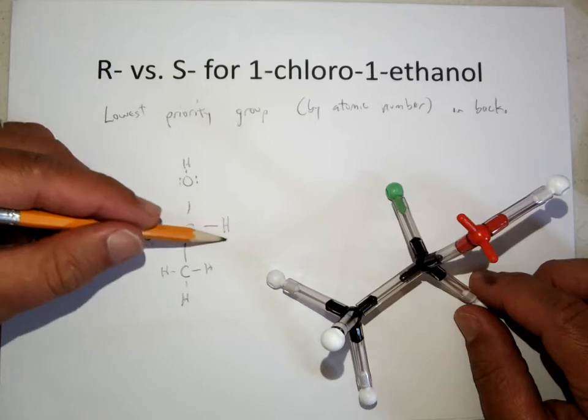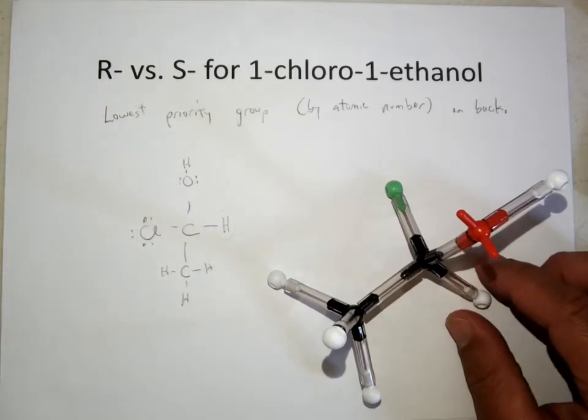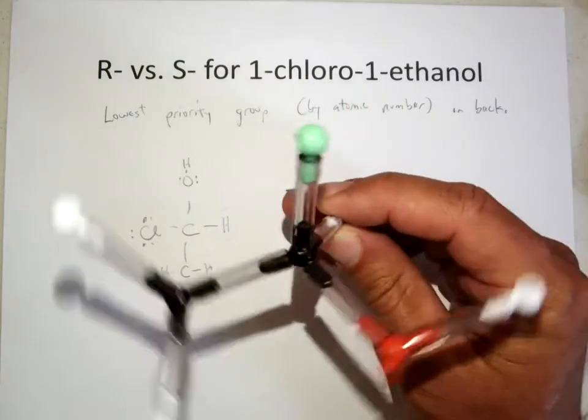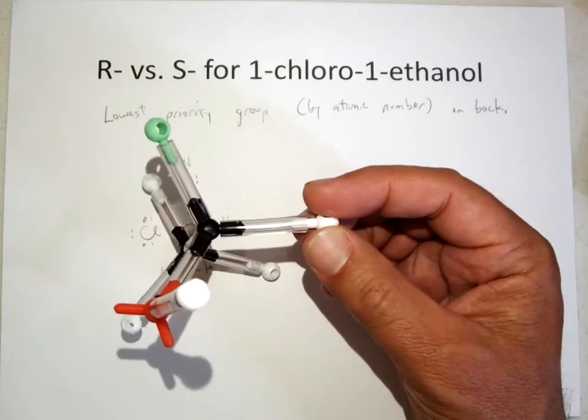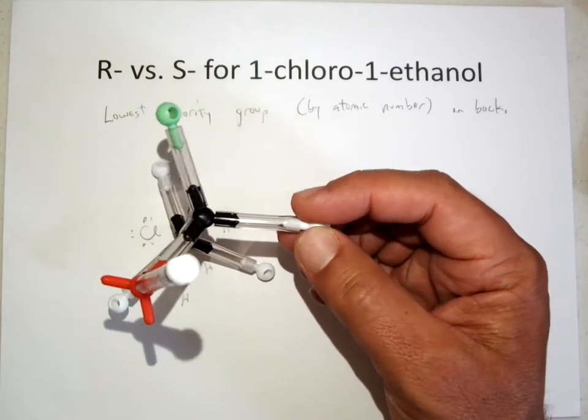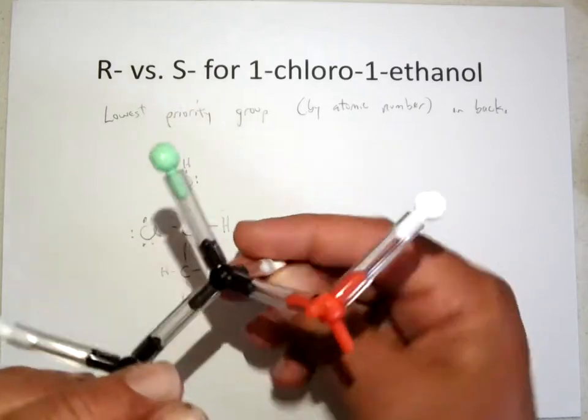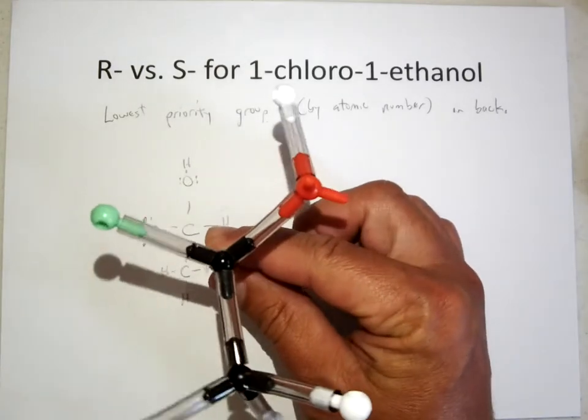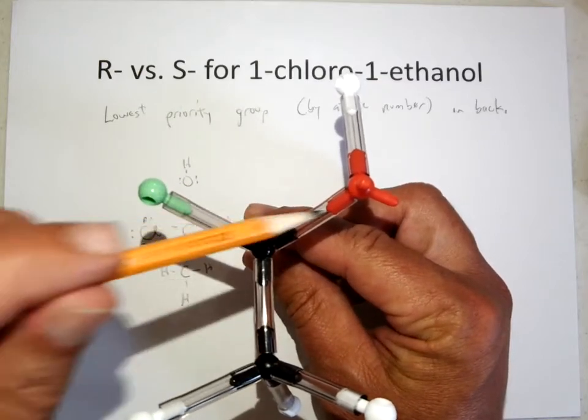And we would say that this hydrogen is in the back. So I'm going to hold this molecule so the hydrogen is in the back. And much like we saw with the Newman projections, if you have a tetrahedral thing and you put something directly in the back, then the other three things are aimed towards you in a triangle.